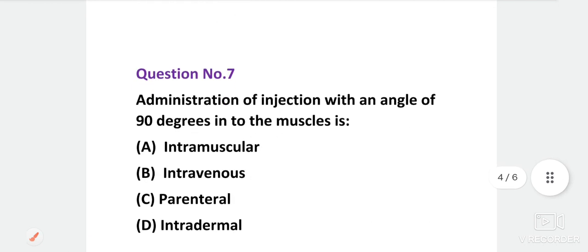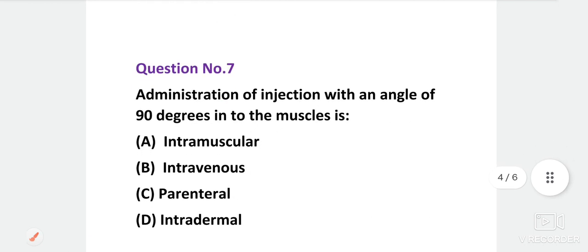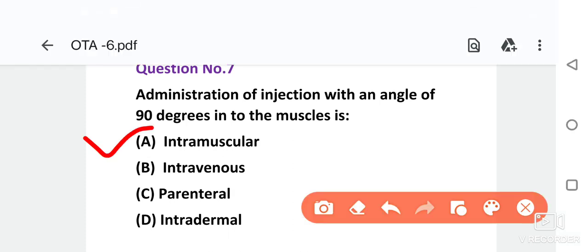Next, administration of injection with an angle of 90 degrees into the muscle is? Options are intramuscular, intravenous, parenteral or intradermal. This is a very easy question. Answer in the comment section. The correct answer is A, intramuscular.